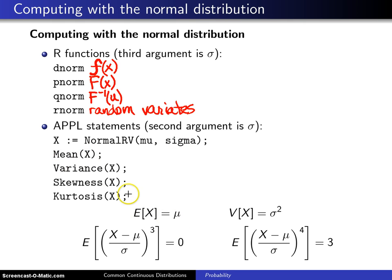When you ask for the variance of x, it will return sigma squared.